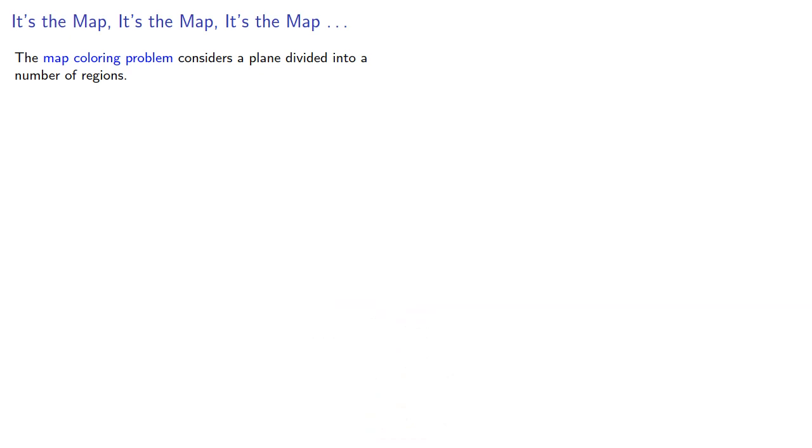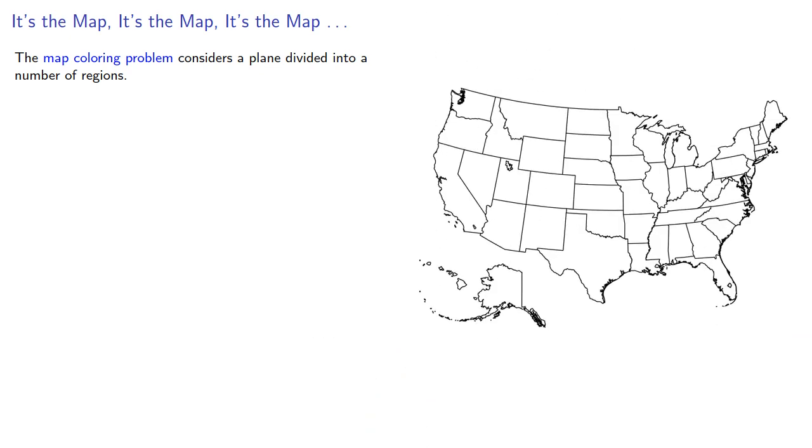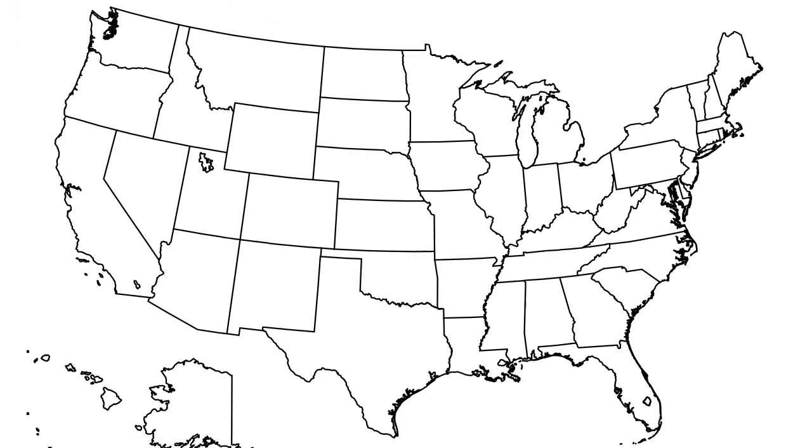The map coloring problem considers a plane divided into a number of regions. Two regions that share a border should be assigned different colors. However, two regions that share a point can be colored the same. So how many colors are required?